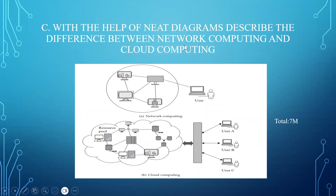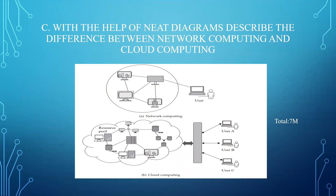Last question: with the help of a neat diagram, describe the difference between network computing and cloud computing. Start with what is network computing and cloud computing — that will be 1 mark. Draw the diagram for network computing and for cloud computing — that's another 1 mark, so 2 marks are covered. Explain the diagram, what the user is doing — another 1 mark. Then explain how data and sources are interconnected — that's the fourth point. Similarly, explain how the user is connected to the pool of servers for cloud computing — totally 4 marks so far. Another 3 marks can come from examples of network computing and cloud computing applications, covering the full 7 marks.